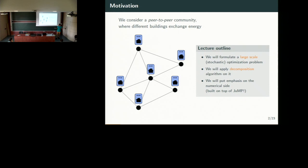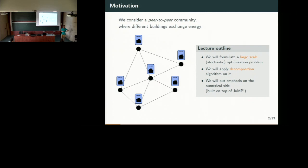As we consider energy systems, in each building you will have demands and production — solar panels, that kind of stuff. Each node problem is formulated as a multi-stage stochastic programming problem, as we consider a problem over a one-day horizon. We want to apply a decomposition algorithm on it and then solve it using Julia and JuMP.